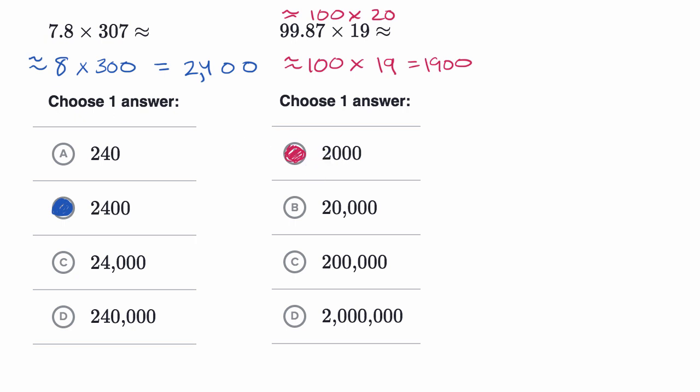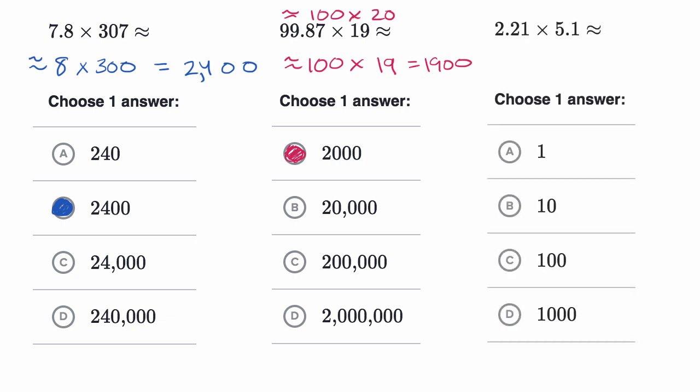Let's do another example. So here, we are asked to multiply 2.21 times 5.1, and we wanna know what it approximately equals. So once again, we are estimating. So pause this video and try to figure it out.